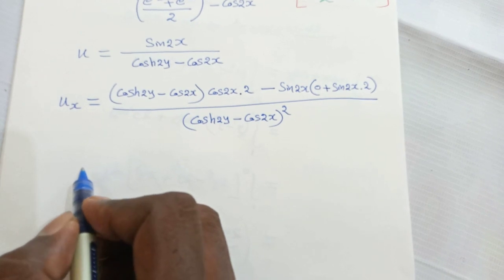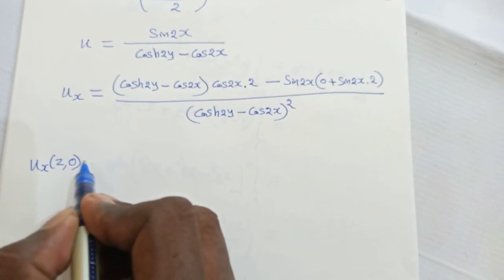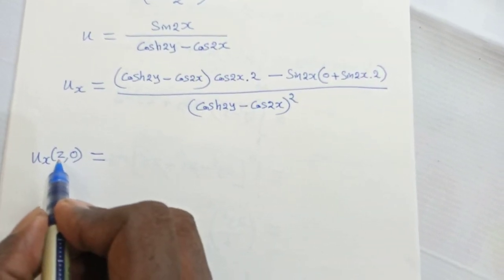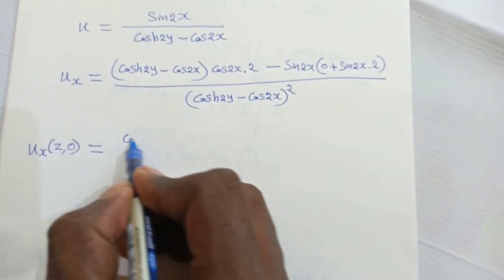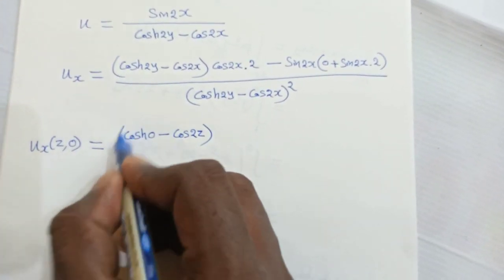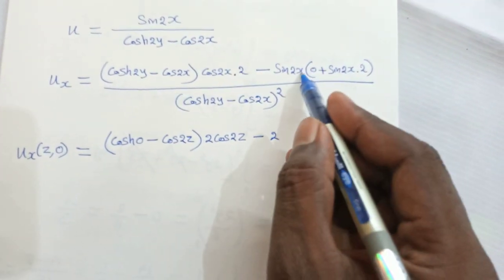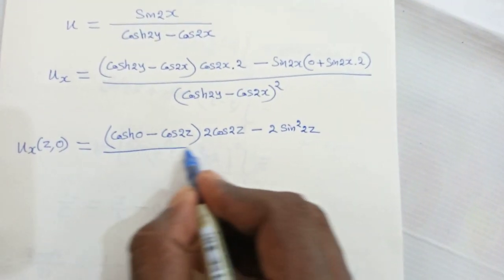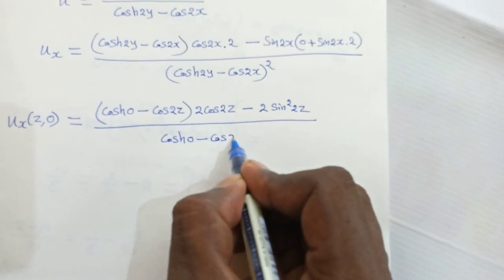We now compute ux(z, 0) by putting x = z and y = 0. With y = 0, cosh(0) = 1. So the numerator becomes: (1 - cos2z)(2cos2z) - sin2x · 2sin2z, which expands to 2cos2z - 2cos²2z - 2sin²2z, all divided by (cosh0 - cos2z)², i.e., (1 - cos2z)².